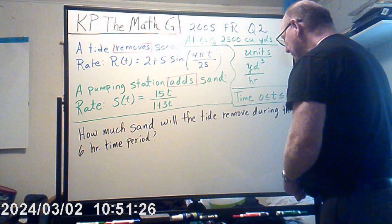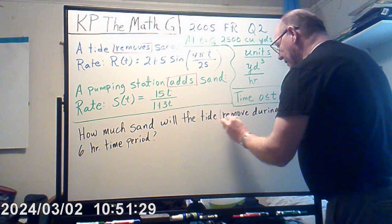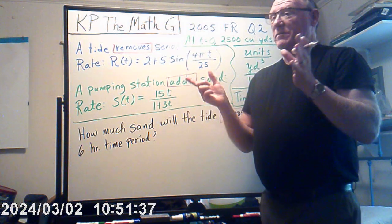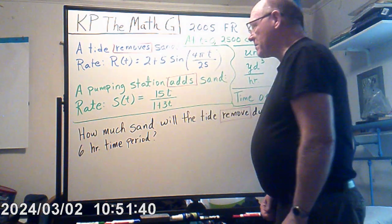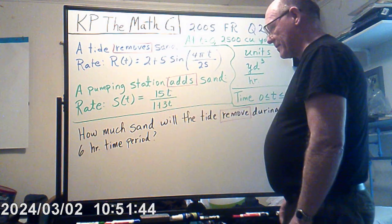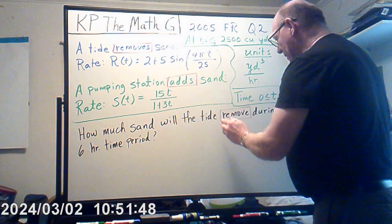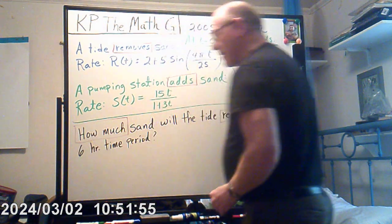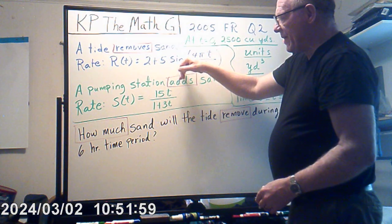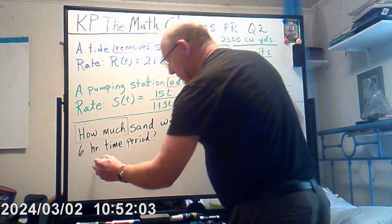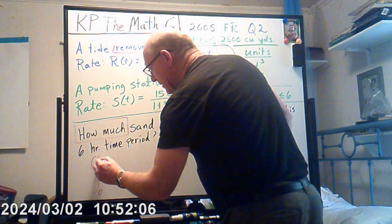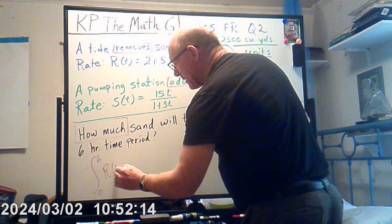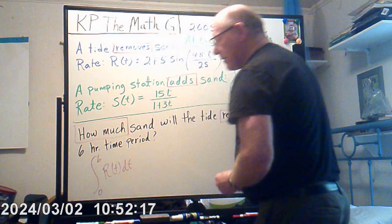The question asks how much sand the tide will remove. We're not interested in how much is already there, and not interested in how much the pumping station adds — all we want is how much sand the tide removes. Since this is a rate, I need a definite integral over the interval from 0 to 6 — that's the six-hour time period — so that's the integral from 0 to 6 of R(t) dt.